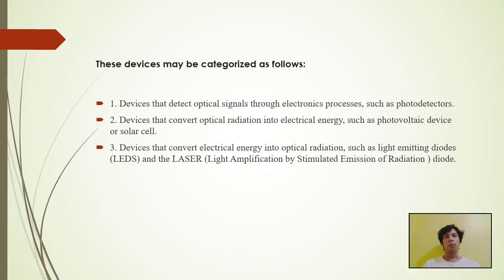These devices may be categorized as follows. Number one, devices that detect optical signals through electronic process, such as photodetector. And number two is devices that convert optical radiation into electrical energy, such as photovoltaic devices or solar cells.